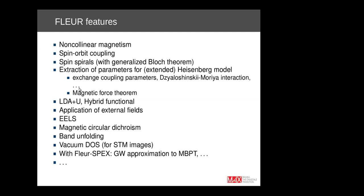FLEUR has many features. We can treat non-collinear magnetism and spin-orbit coupling. We can describe spin spirals with a generalized Bloch theory, extract parameters for the Heisenberg model and the extended Heisenberg model — such as exchange coupling parameters, Dzyaloshinskii-Moriya interaction parameters, magneto-crystalline anisotropy — using the magnetic force theory. We have many exchange correlation functionals including LDA+U and hybrid functionals. We can apply external fields, perform calculations of XANES spectra, calculate magnetic circular dichroism, do band unfolding, calculate vacuum density of states for simulating STM images, and work together with the SPEX code for GW approximation to many-body perturbation theory.